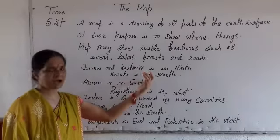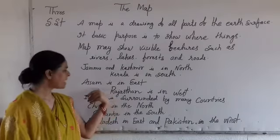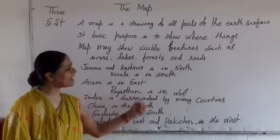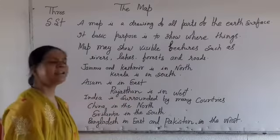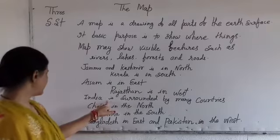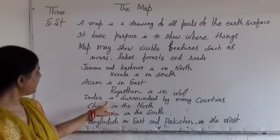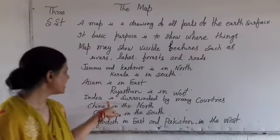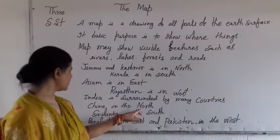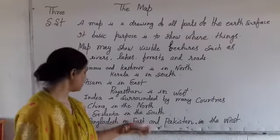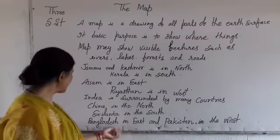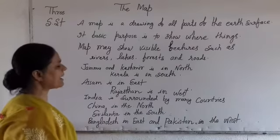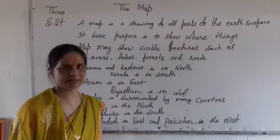Kerala is in the south. Assam is in the east. Rajasthan is in the west. India is surrounded by many countries. China is in the north. Sri Lanka is in the south. Bangladesh is in the east. And Pakistan is in the west.